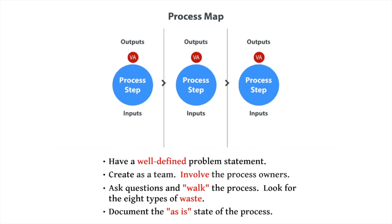Document the as-is state of the process. When you look at how things run currently, answer questions like how much, how many, or how long. If you can't see how things are done today, how can you improve them?